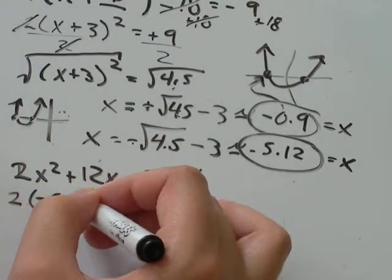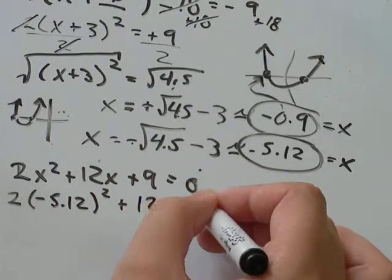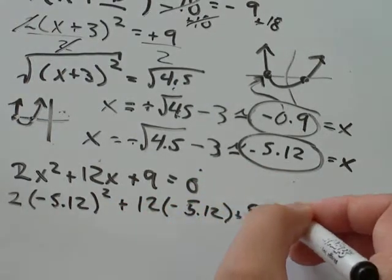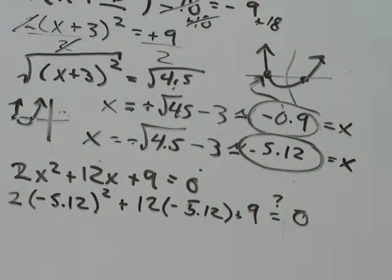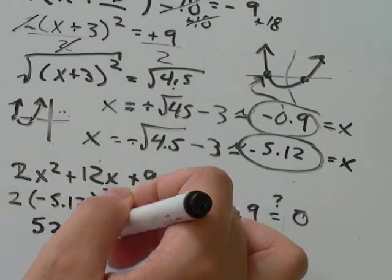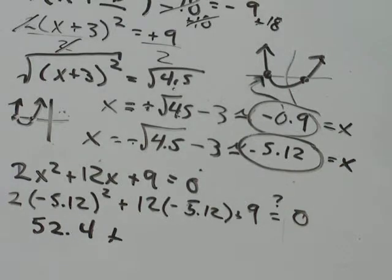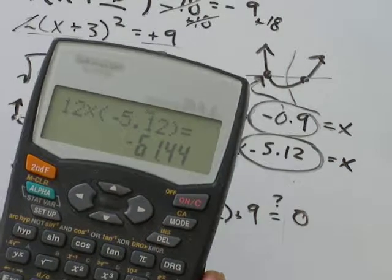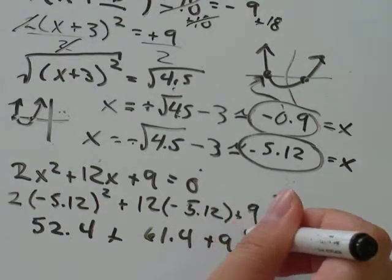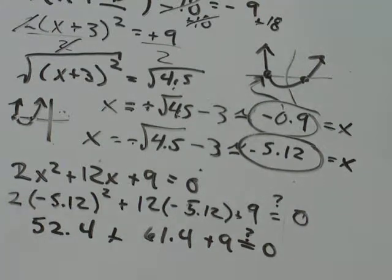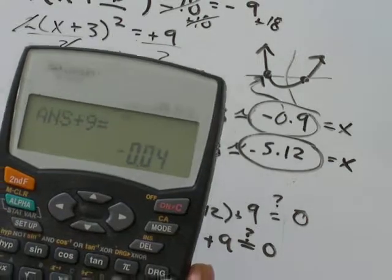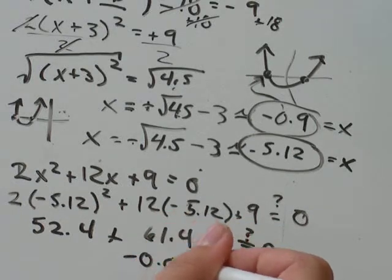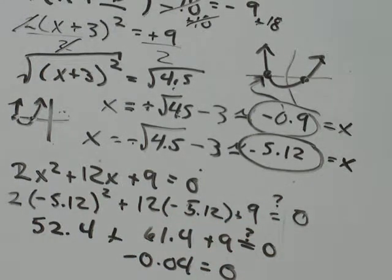We'll do the same thing with our other solution. 2 times negative 5.12, and I'll remember to square it this time. Plus 12 times negative 5.12 plus 9. And does that still equal 0? Negative 5.12 squared times 2. I get that's equal to about 52.4. And I get negative 0.04 for this side. Negative 0.04 is also pretty close to 0. So I'm pretty happy with my solutions.